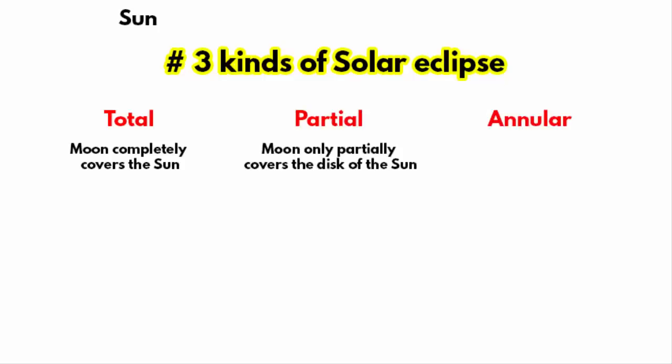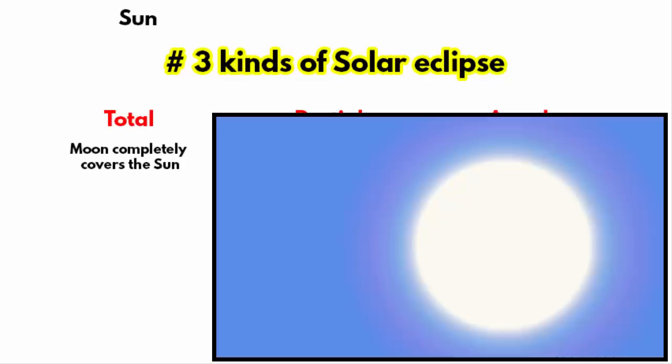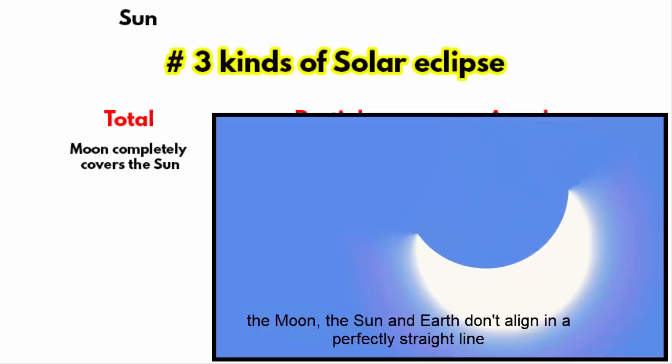Partial solar eclipse happens when the moon only partially covers the disk of the sun. During a partial solar eclipse, the moon, the sun, and earth don't align in a perfect straight line.